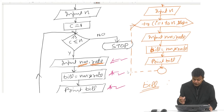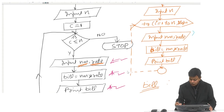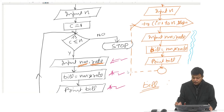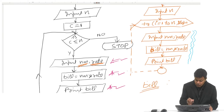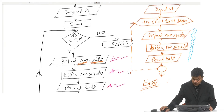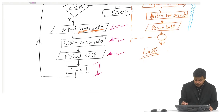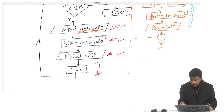Inside the body of this for loop there are 3 statements. This loop will get executed n number of times. Whenever the value of i becomes greater than n, we come down and stop.